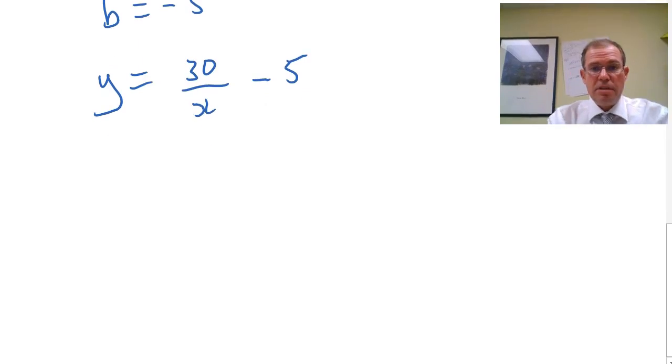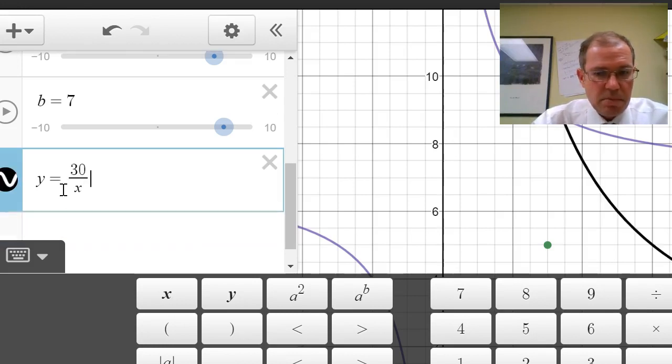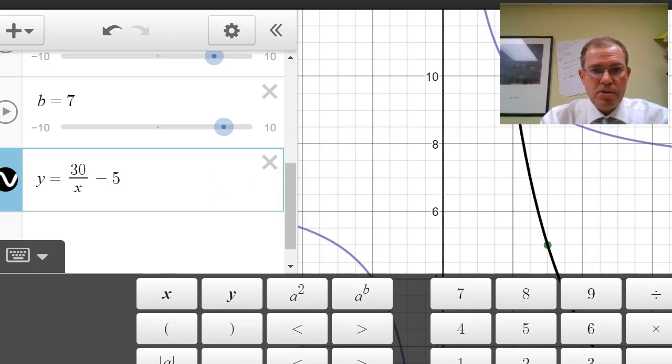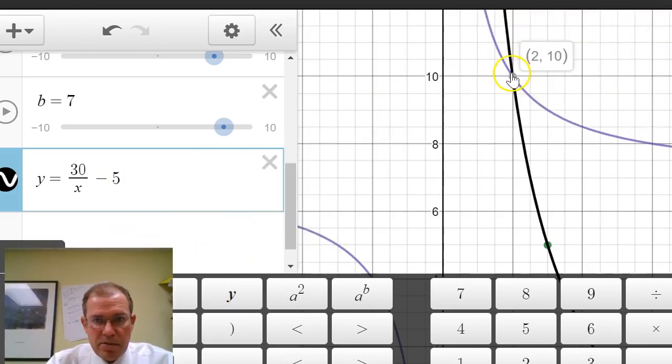And we can check this in Desmos to see if it actually does go through our two points. Okay, so I'm going to enter that equation into Desmos. So y equals 30 divided by x, and then I'm going to minus 5. And if we've done our algebra right, we can see it goes through the two points. And there you can see it beautifully passing through the first point, 2, 10, and the second point there, which was 3, 5. Okay, so thank you for watching. If you like this video, please watch some of my other ones. I hope this helped. Thank you.